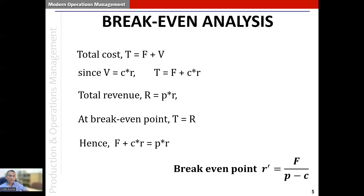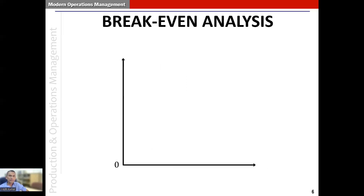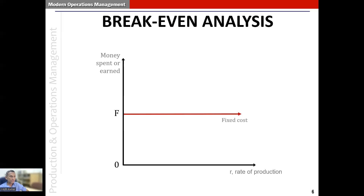Let's look at how this can be understood graphically. Here we have a graph where the x-axis represents the rate of production small r and the y-axis represents money spent or earned. The fixed cost is not dependent on the rate of production, so it's a line running parallel to the x-axis. The total variable cost capital V equals small c times small r and, since it depends on the rate of production, it is depicted as a sloping line.